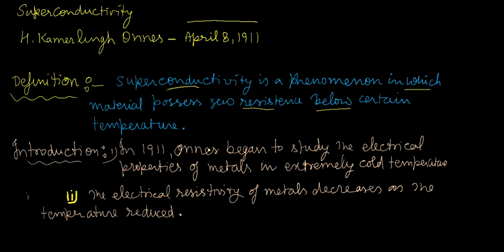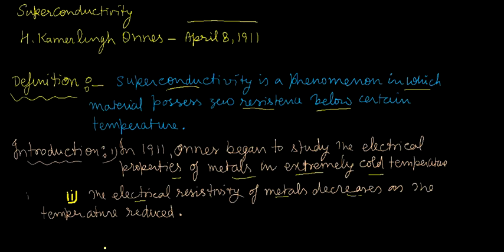Now, when did Kamerlingh Onnes discover this phenomenon? In 1911, Onnes began to study the electrical properties of metals at extremely cold temperatures. He observed that the electrical resistivity of metals decreases as the temperature reduces. On that basis, he defined superconductivity in 1911.